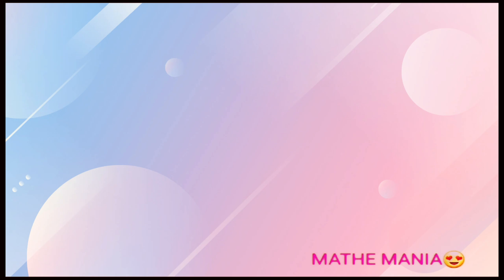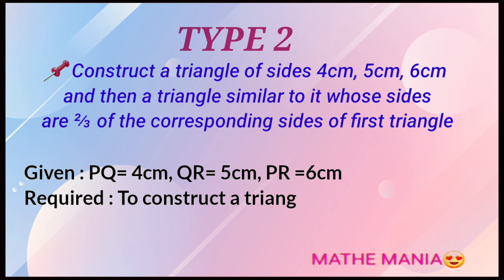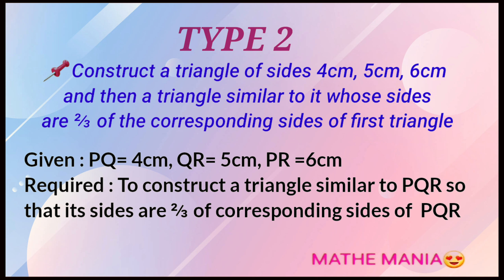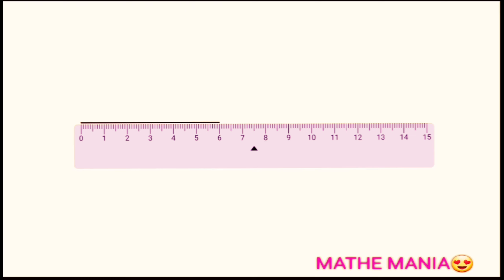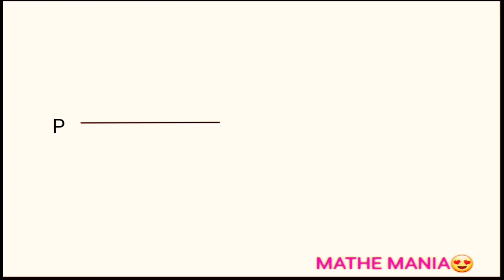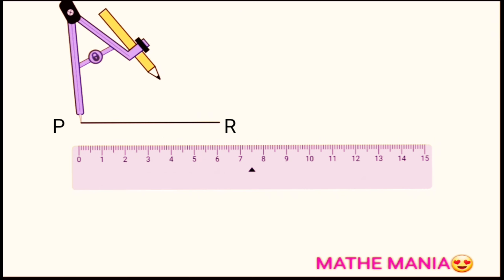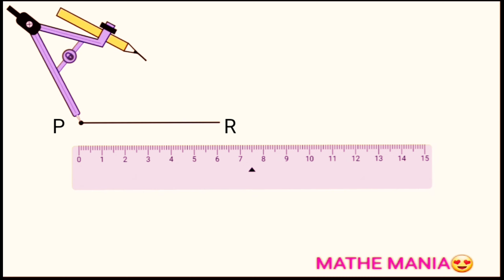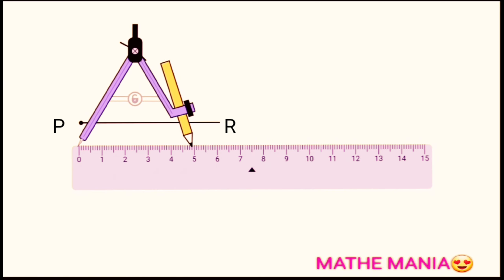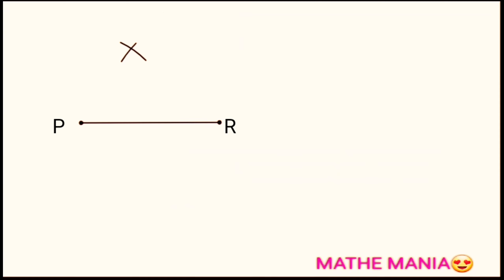Next we'll learn to draw a triangle similar to a given triangle. Here we have a question where the triangle has sides four, five, and six centimeters. All of you have done construction of triangles in junior classes so I'll quickly construct the triangle. We'll always keep the first type of construction in mind because in all constructions we have to divide a line segment into a given ratio. Links for various types of triangle constructions are in the description box. So, is your triangle PQR ready?